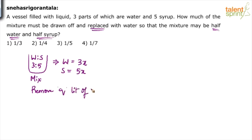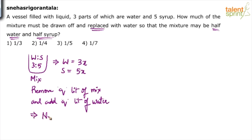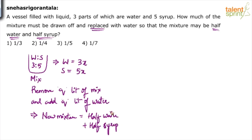After doing that operation — removing q liters of mixture and adding q liters of water — the new mixture will be half water plus half syrup. This is key: you know that the final mixture is going to have half water and half syrup. Initially it is w and s; finally it is w-dash and s-dash.